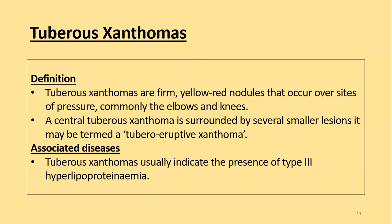The second main type are tuberous xanthomas. They are firm yellow, red, or orange nodules that occur over sites of pressure, commonly the elbows and knees. A central tuberous xanthoma surrounded by several small lesions is called tubero-eruptive xanthomas. Tuberous xanthomas are usually associated with type 3 hyperlipoproteinemia.